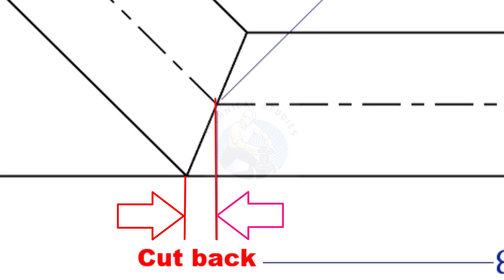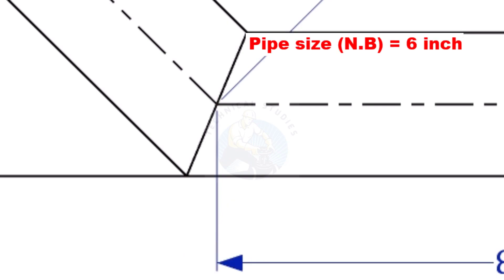To mark a miter cut, we need to know the cutback of the miter. In this offset, the nominal diameter of the pipe is 6 inch.